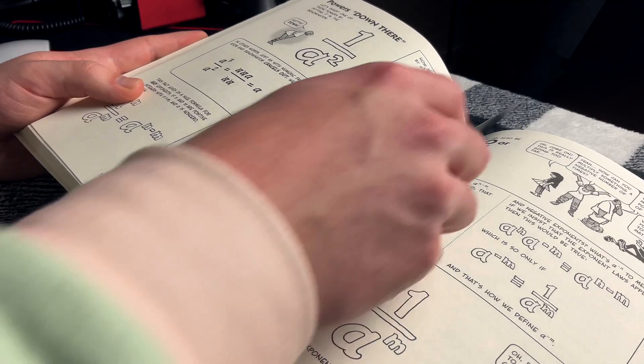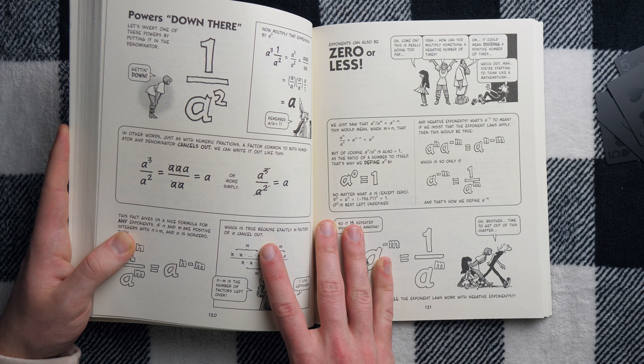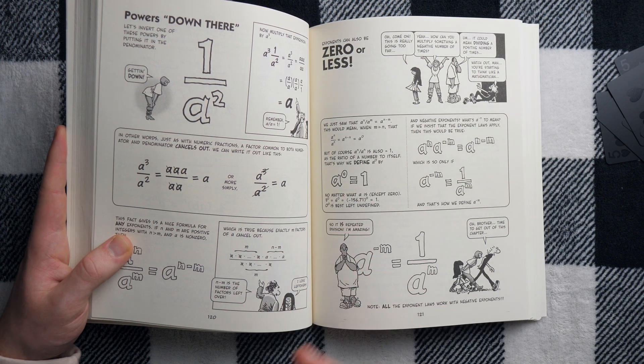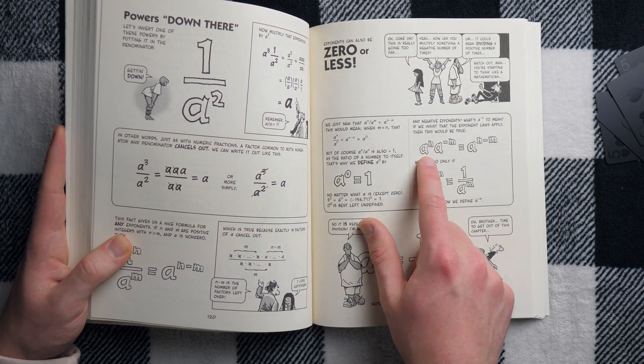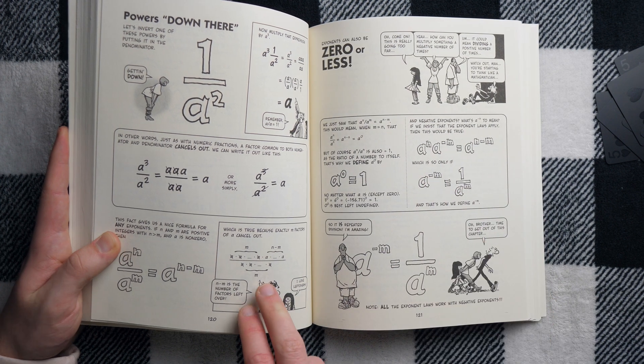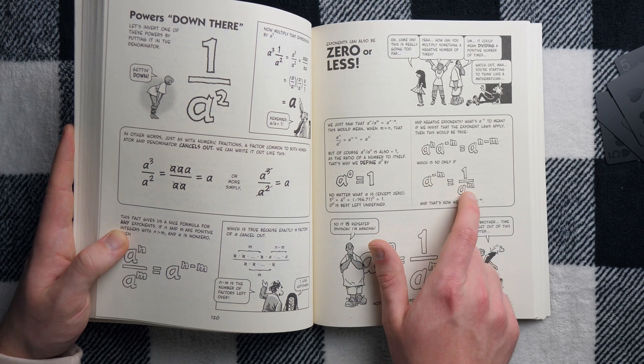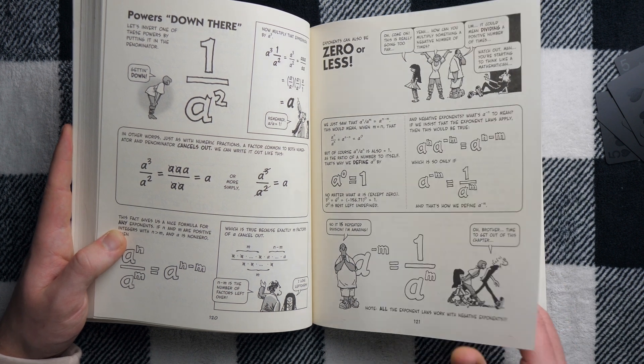We get a detailed rundown of the exponent laws here, why they work and how we can answer some interesting questions like what does a negative exponent mean? And we can answer that based on previously established exponent rules for division. And find that a negative exponent actually means repeated division, pretty much. Pretty cool.